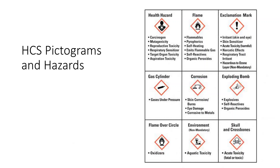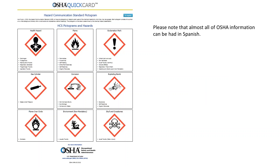The HCS pictograms and hazards — this is basic must-know information to understand HazCom. These pictograms are required on labels of hazardous materials. They are not required to be on the SDS, but the information they represent must be. OSHA has excellent Quick Cards for training employees, which you can find on the OSHA website — a great handout for posting on bulletin boards or handing out to employees during training.